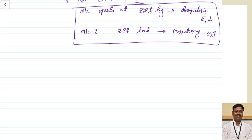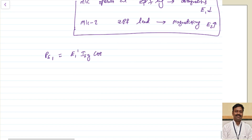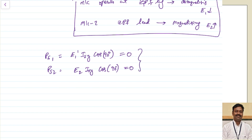Let us try to calculate the synchronizing power. The synchronizing power Ps1 equals voltage multiplied by current, that is E1 dash into ISy into cos of the angle between them. The angle is nearly equal to 90 degrees because we are neglecting resistance. Similarly, Ps2 equals E2 into ISy into cos of the angle - again the angle is 90 degrees, so this also equals zero. We can tell that the synchronizing active power is equal to zero.